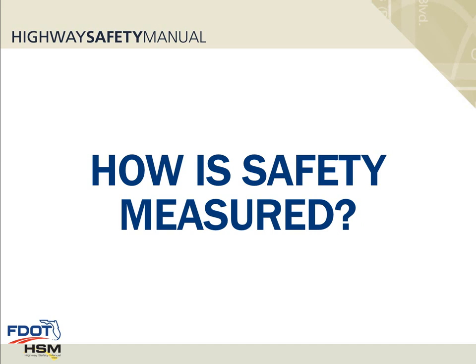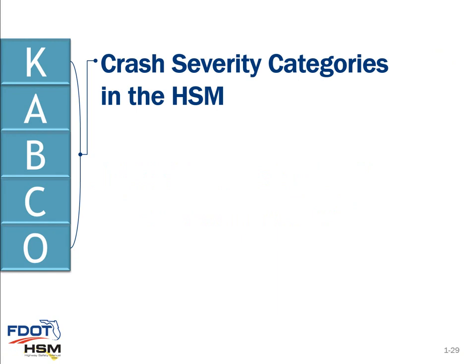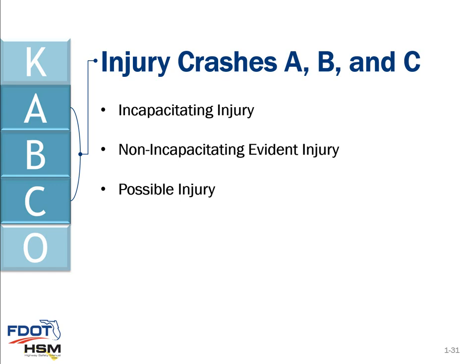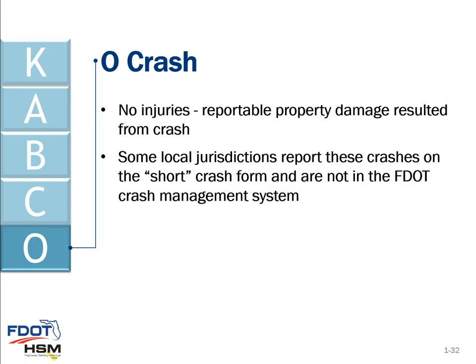As we look at how safety is measured, it's important to consider the different crash classifications. The Highway Safety Manual has five categories: K — a fatality, where one or more persons have died within 30 days of the crash; injury crashes including A (incapacitating injury), B (non-incapacitating evident injury), and C (possible injury); and O — no injuries but reportable property damage. Some local jurisdictions report O crashes on short-form crash forms not captured in the FDOT crash management system.